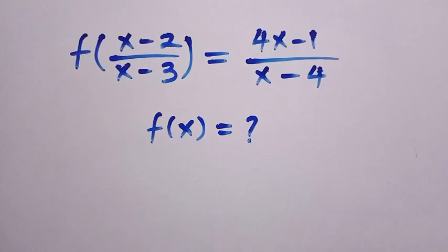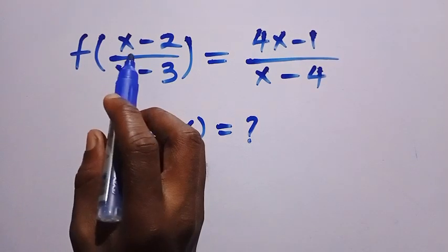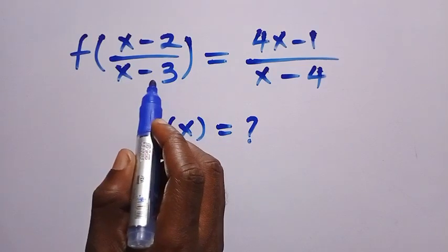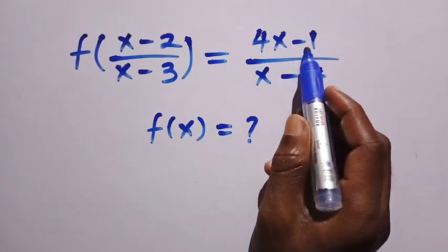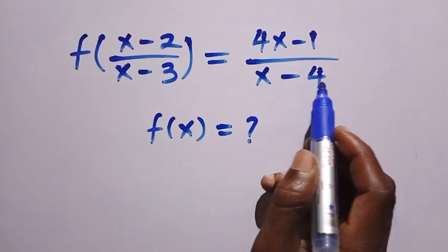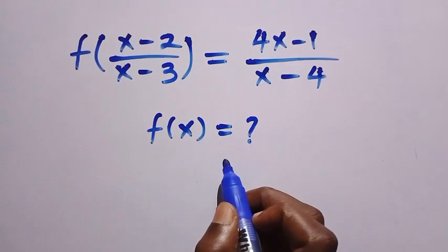Good day viewers, you are welcome. How to solve these nice function equations? We have f of x minus 2 divided by x minus 3 equals 4x minus 1 divided by x minus 4. And what is f of x?